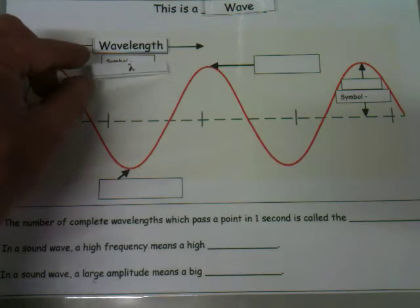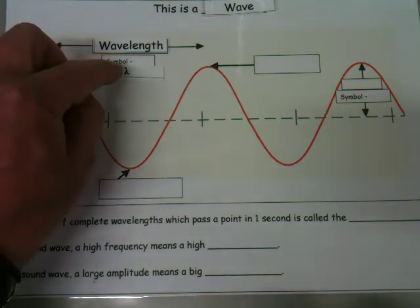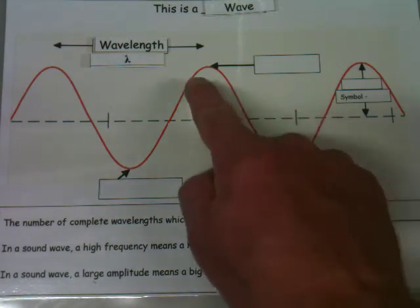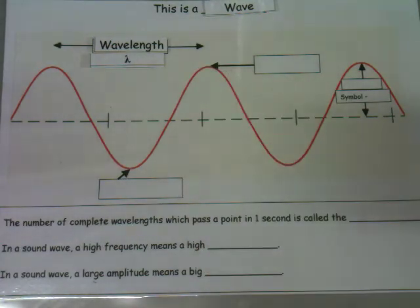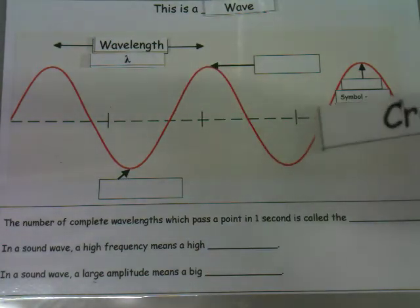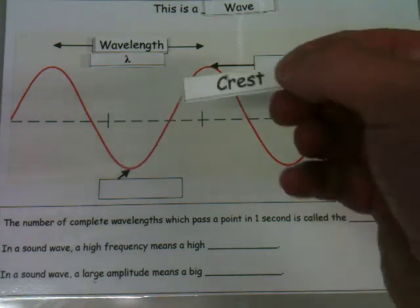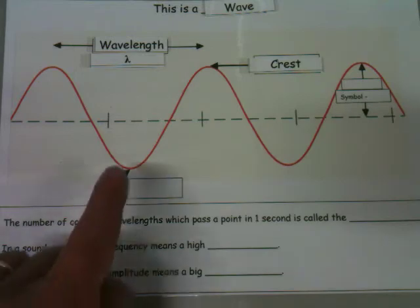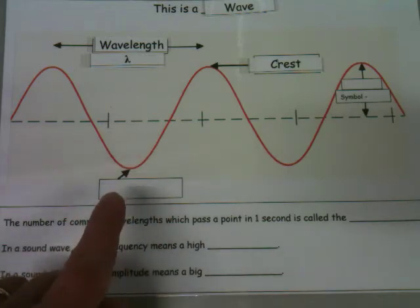This, as we've said previously, the top of the wave we call the crest of the wave. And the bottom of the wave here we call a trough.